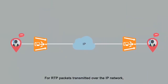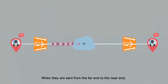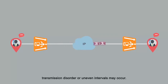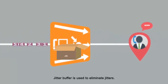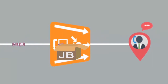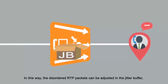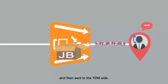Key VOIP technologies: Jitter Buffer. For RTP packets transmitted over the IP network, when they are sent from the far end to the near end, transmission disorder or uneven intervals may occur. Jitter buffer is used to eliminate jitters. Packet delays are increased so that the disordered RTP packets can be adjusted in the jitter buffer and then sent to the TDM site.